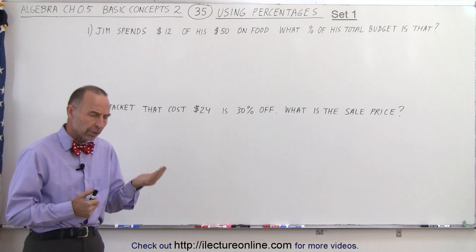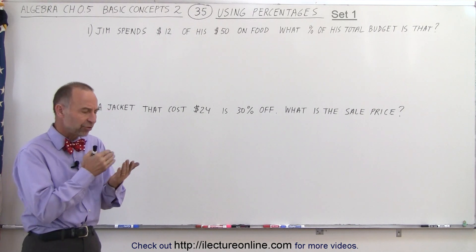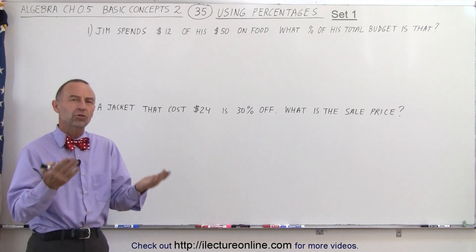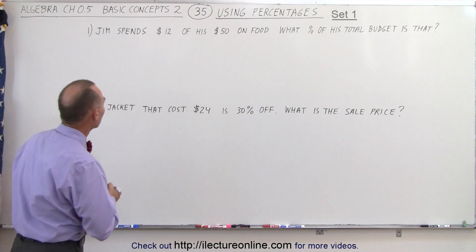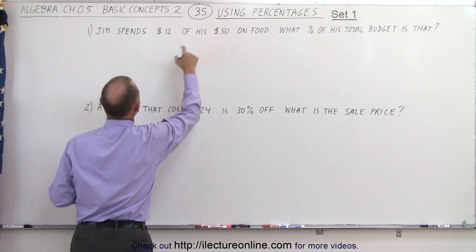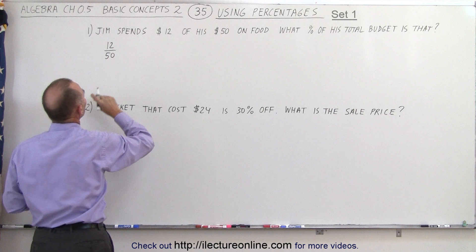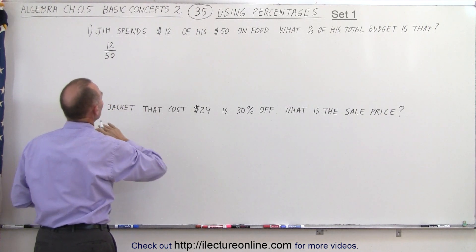To convert a number to a percent, we first need to convert it to a fraction or to a decimal. Let's try it both ways. We're going to write this as a fraction, so we can write $12 divided by $50. We'll leave the dollars off: 12 divided by 50.